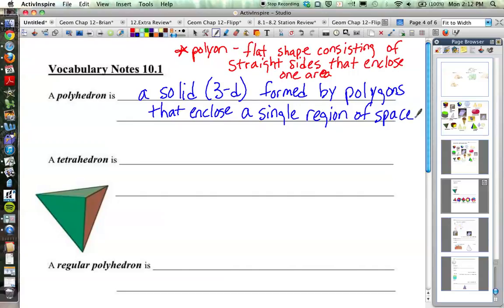Okay, so that gets at that three-dimensional part. So a polyhedron has, say, triangles for all its sides, but it's three-dimensional and it encloses that space. There's no open sides to it. That's what a polyhedron is.